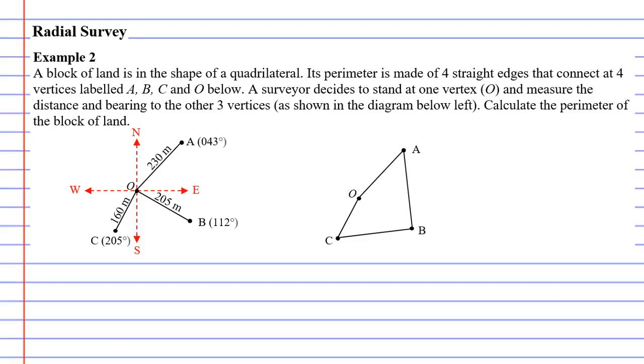In this video we're going to complete example 2. It says here that we've got a block of land in the shape of a quadrilateral. We can actually see that on the right side. Its perimeter is made of four straight edges that connect at four vertices labeled A, B, C and O below.